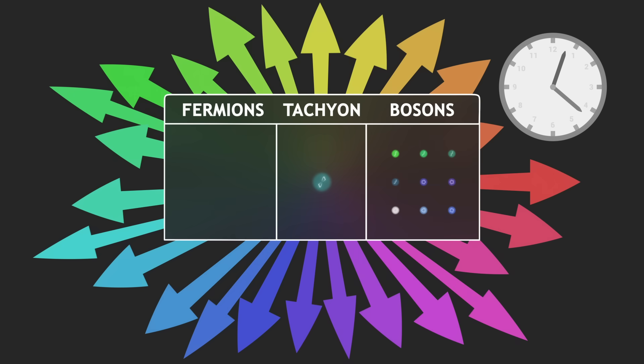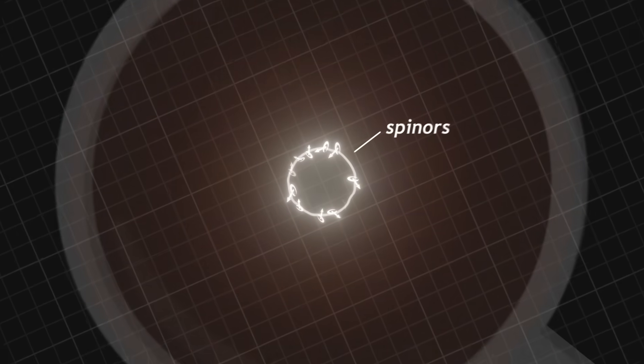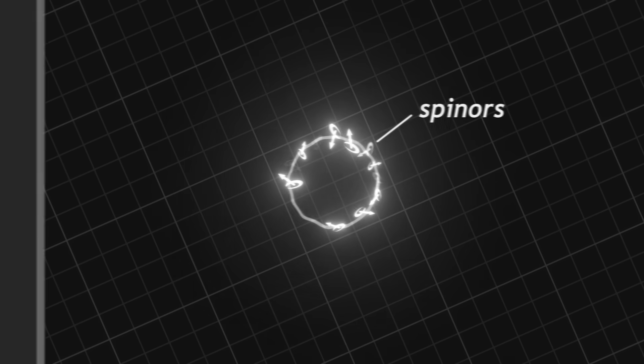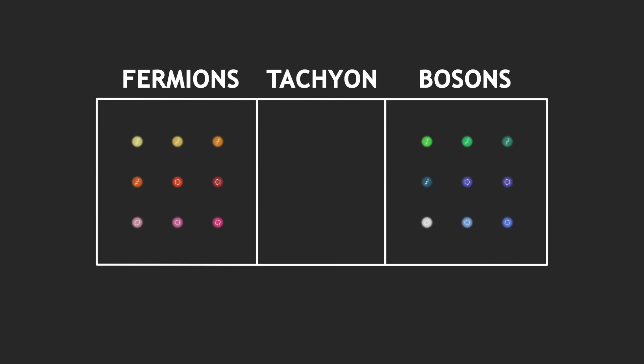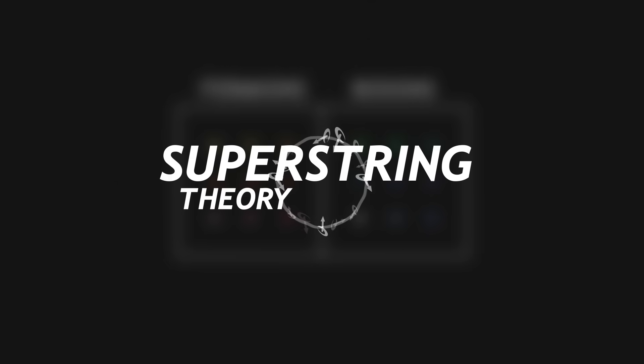To solve these problems, we'll have to push the theory a little further. To include fermions in our model, the idea is to add spinors on the strings. They are the mathematical ingredient that already described fermions in the standard model. By simply adding spinors to the strings, we solve two problems. The model now predicts the existence of fermions, and it no longer predicts the tachyon, the particle that was problematic. This more complete theory is called super-string theory.